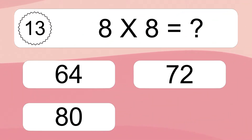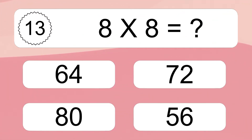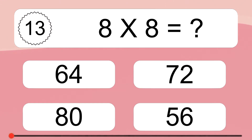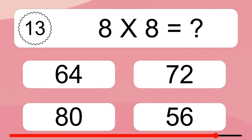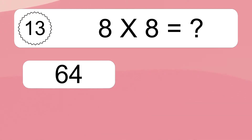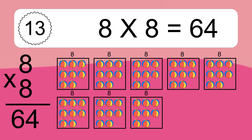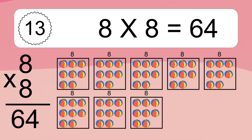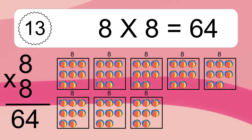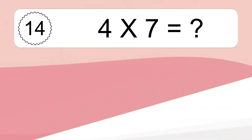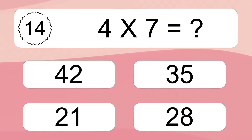8 times 8 equals what? 8 times 8 equals 64. We have 8 boxes, and each box has 8 colorful balls inside. If you count all the balls in all the boxes together, you will have 8 times 8 balls. This equals 64 balls.